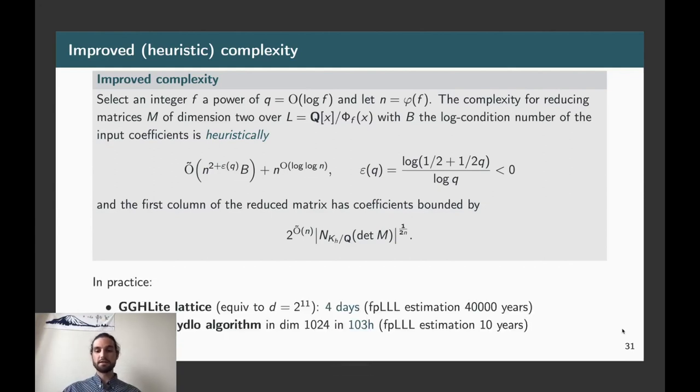In practice, and this is implemented with the PARI/GP language, this technique allows to reduce GGH-like lattices in dimension 2 to the 11 in four days where FPLLL would take up to an estimation of 100 years, which is an improvement of something like 4 million. And we were also able to reconstruct the Gentry-Szydlo algorithm and use it in dimension 1024 in 100 hours where FPLLL for the same kind of lattices would have taken, let's say, 10 years, which is a very huge improvement.